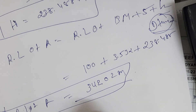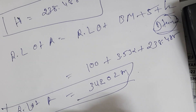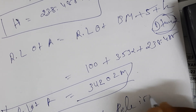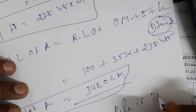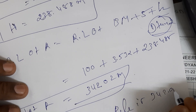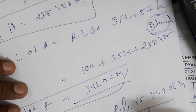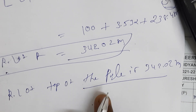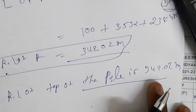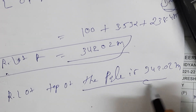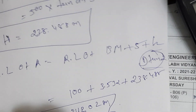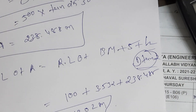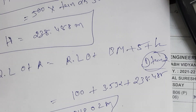The RL of the top of the pole is 342.02 meters. That is the example we need to use and solve.